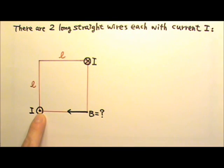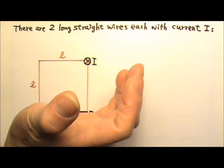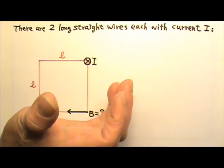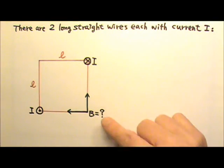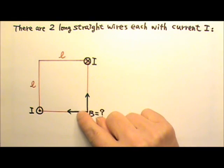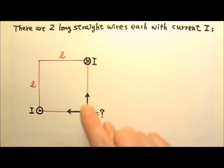And then if I use my thumb to follow the current out of the paper, on the right side of the current, my curved four fingers go upward. So this field goes upward, and they have the same magnitude because it's the same amount of current, equal distance away.